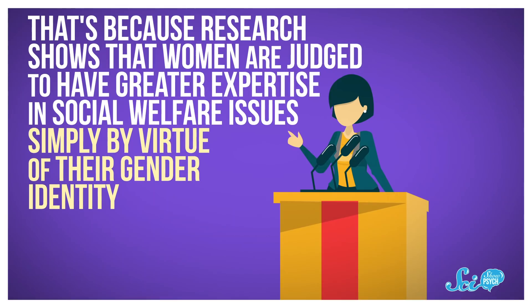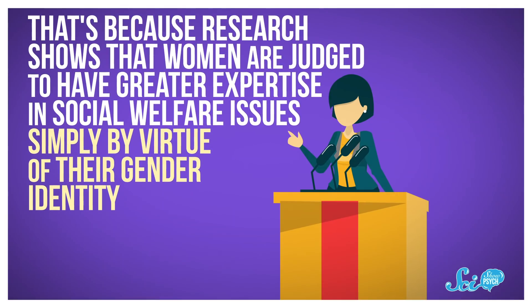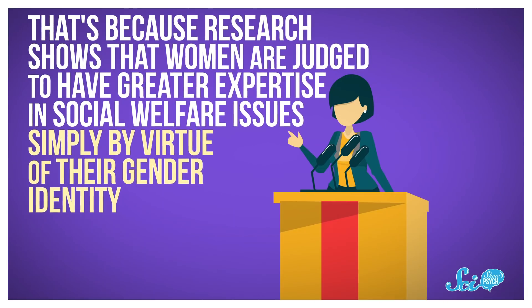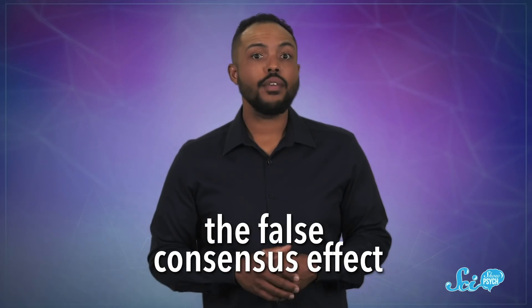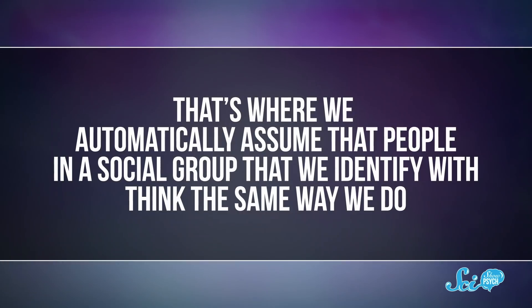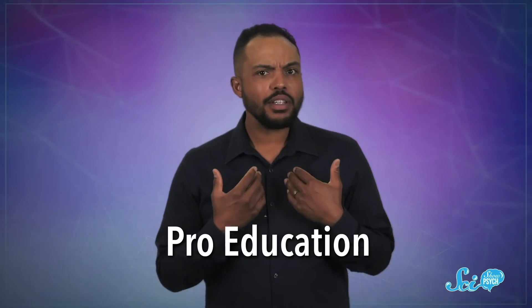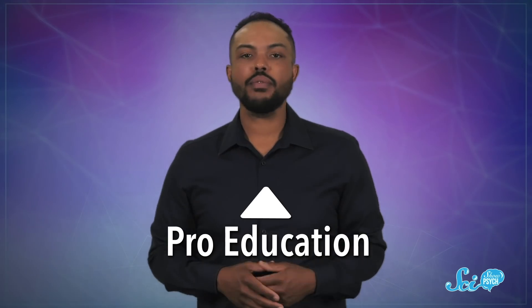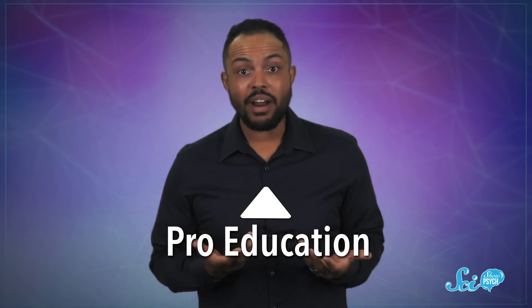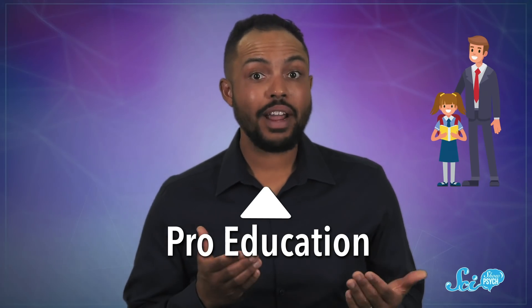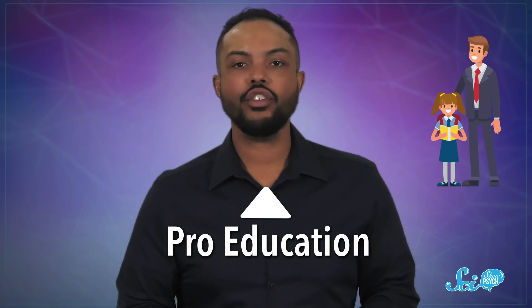That's because research shows that women are judged to have greater expertise in social welfare issues simply by virtue of their gender identity. This brings me to another social cognitive phenomenon—the false consensus effect. That's where we automatically assume that people in a social group that we identify with think the same way we do. Like, I may believe that I consider educational reform very important because I'm a parent. And if so, I may also assume that any candidate who's a parent will also champion educational reform,